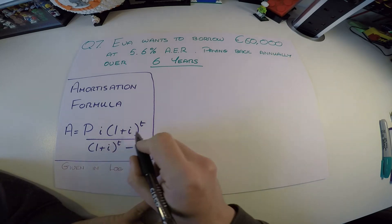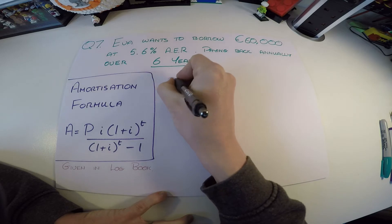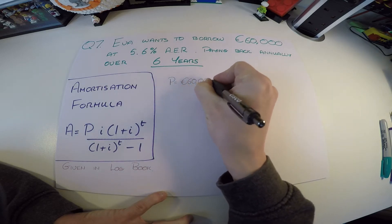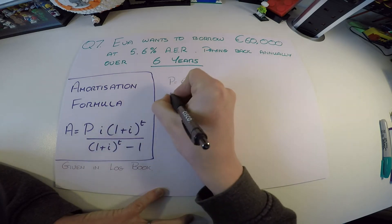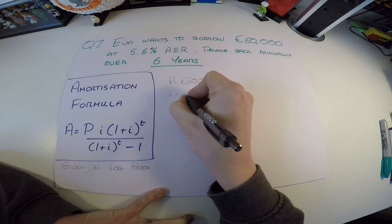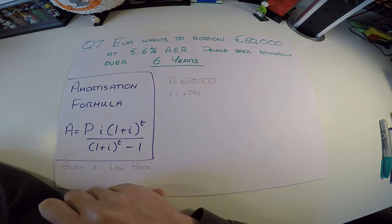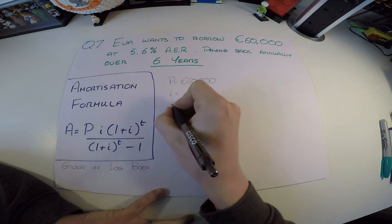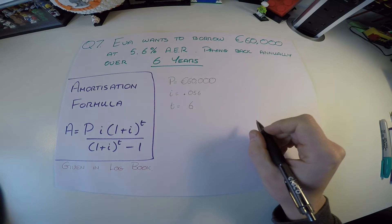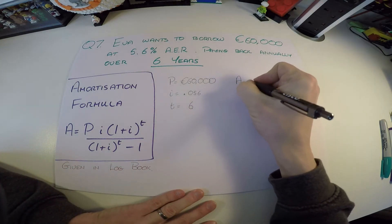We need P, which is how much she's borrowing: 60,000. We need i, the interest rate always in decimal — so 5.6% is 0.056. And we need T, which is 6. Then we just plug that into the formula.